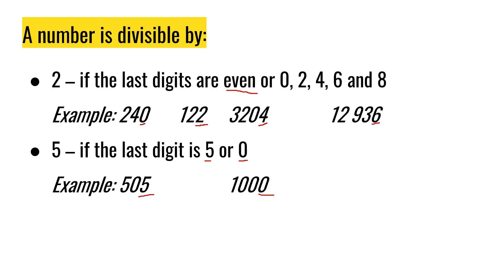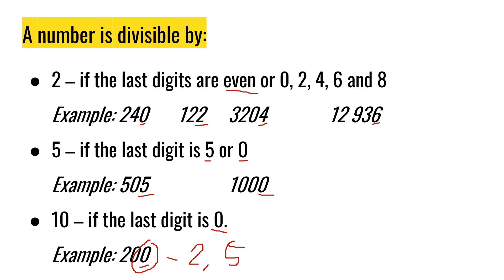10, if the last digit is 0, ang nagtatapos ay 0. Example: 200, number na nagtatapos ay 0, so meaning divisible by 10. Masasabi natin na kapag ang number ay nagtatapos sa 0, it is divisible by 2, 5, and 10.